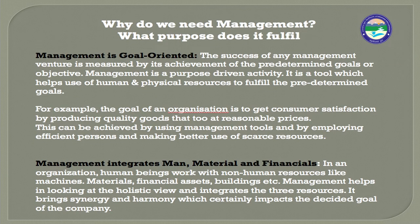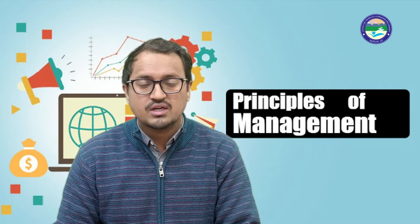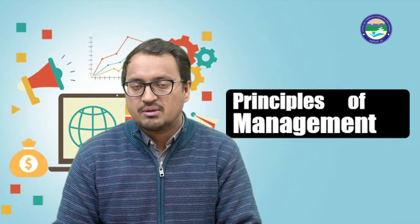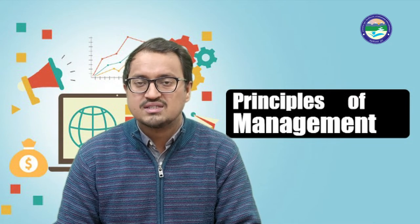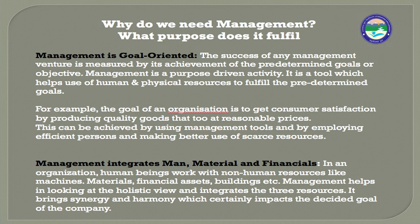Management integrates man, material, and financial resources. Kisi bhi company mein ya to man involved honge, ya materials involved honge, ya financial resources ki constraint hoti hai. Ek limit hoti hai har cheez ko kharach karne ki. If a project has a deadline and an already decided budget, you have to work within it — efficiency and efficacy must be maintained. Human beings work with non-human resources like machines, materials, financial assets, and buildings. Management looks at the holistic view, integrates the three resources, and brings synergy and harmony which impacts the decided goal of the company.